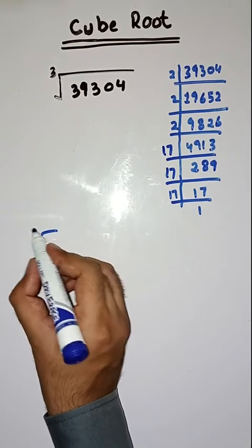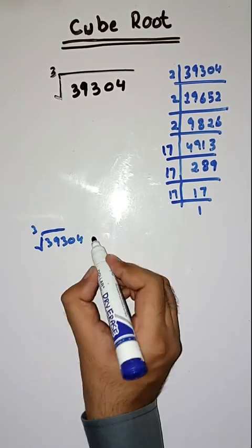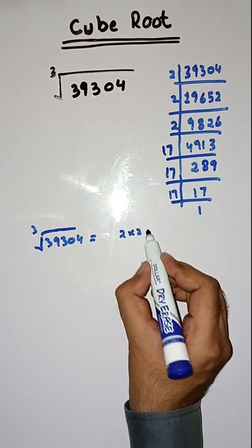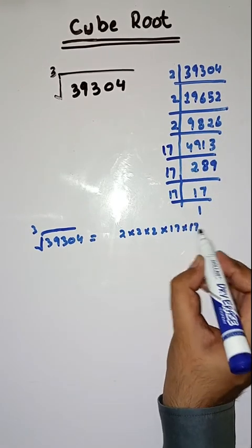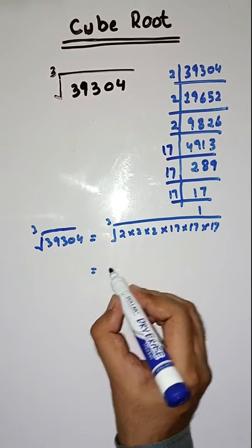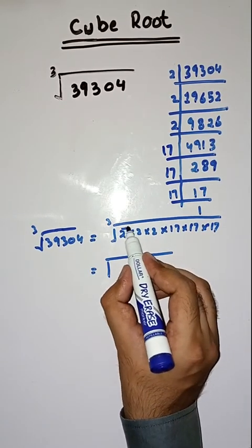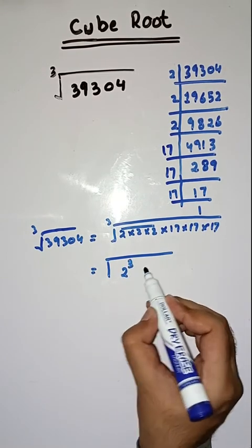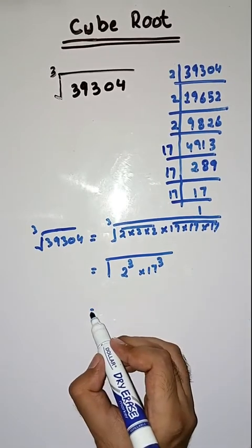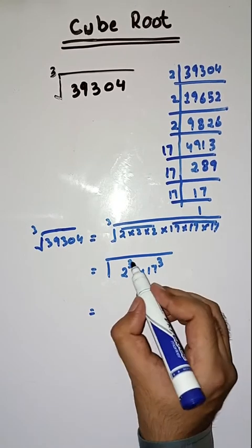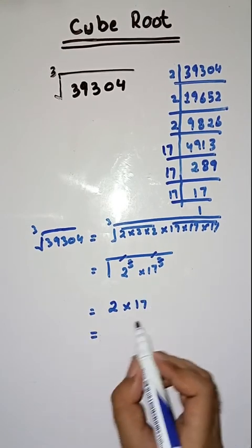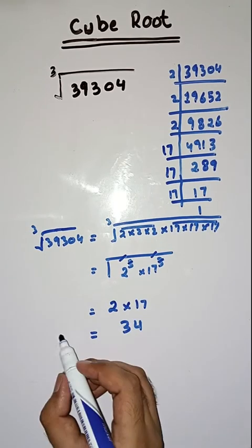Cube root of 39304 is equal to: we write the prime factors as 2 × 2 × 2 × 17 × 17 × 17. Now we have to find the cube root. We group them: 2 appears three times so that's 2 to the power 3, and 17 appears three times so that's 17 to the power 3. Taking the cube root, we cut the groups: 2 × 17 = 34.